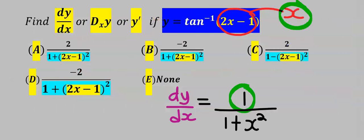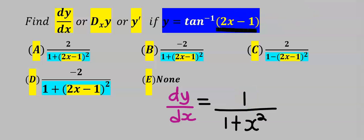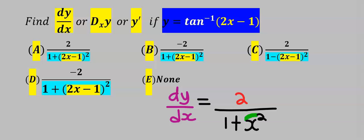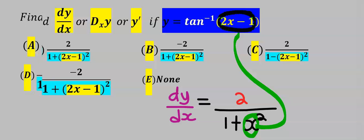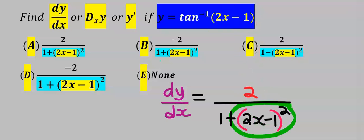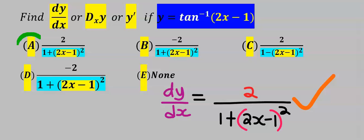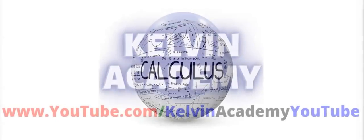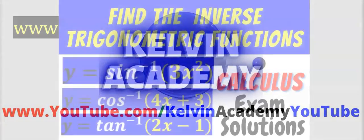The differentiation of x gave us 1, but now we have 2x minus 1. Differentiating 2x gives 2, and differentiating the constant 1 gives zero, so we leave it out. Next, in the place of x we replace it with 2x minus 1. This is simplified — you do not need to open the bracket. This is our dy/dx. From the options, our answer is A. This is calculus.